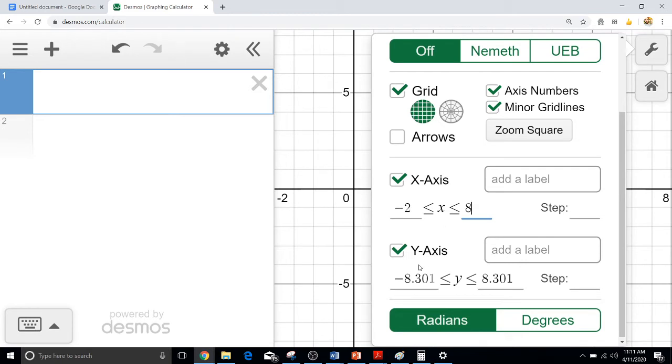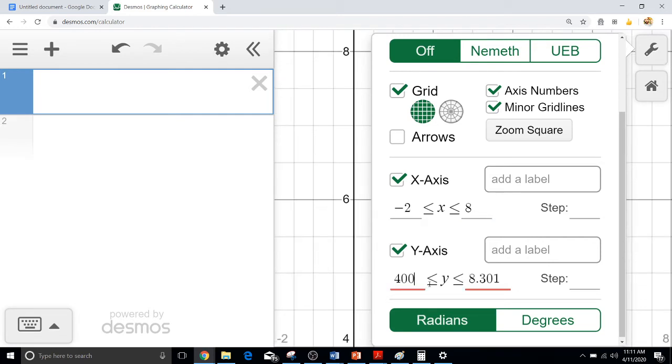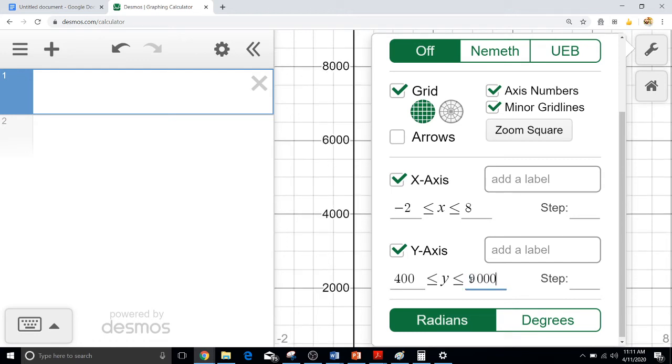As far as the y-axis goes, let's go ahead and change those. We know that the lowest possible value it can have is 500, so let's just type in 400 here, just to give us a little bit of extra room. Whereas our largest is going to be a little over 8,000, so let's just go 9,000. Okay, that's all we really need to do.